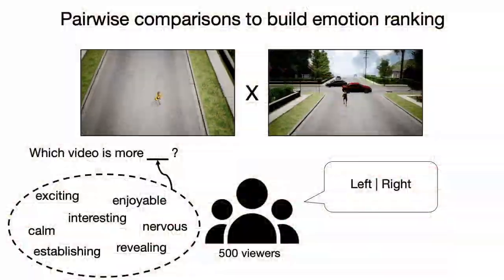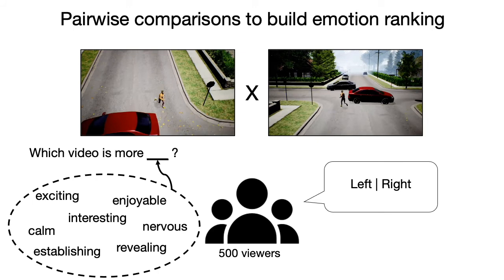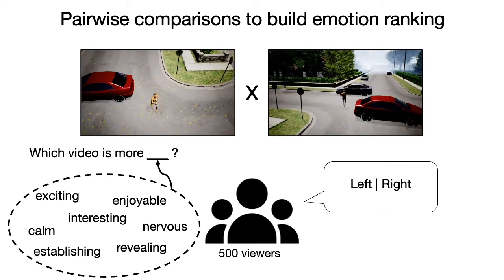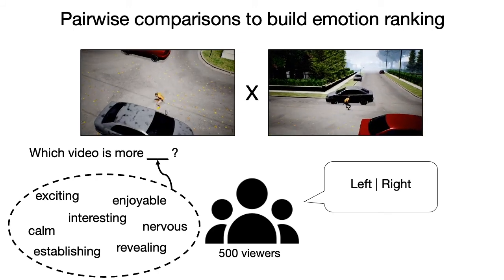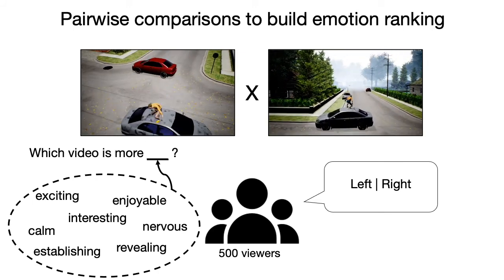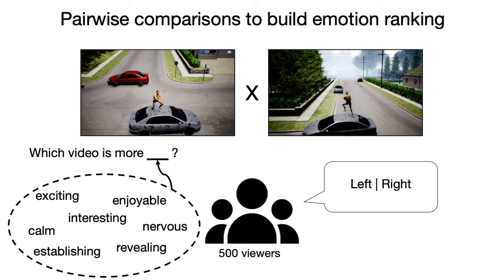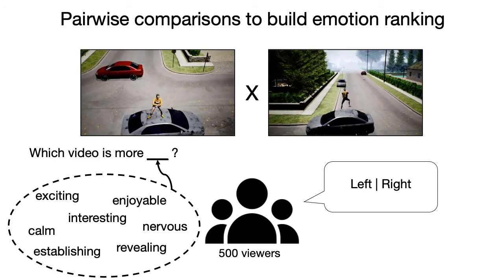Next, we use a crowdsourcing framework to build a ranking of emotions for each one of the videos. Here, users watch two videos at a time and have to answer which one is more exciting, interesting, or enjoyable, for example, choosing between the left and right options.